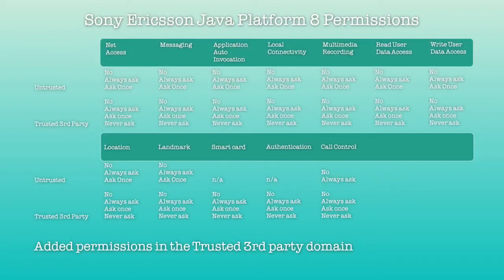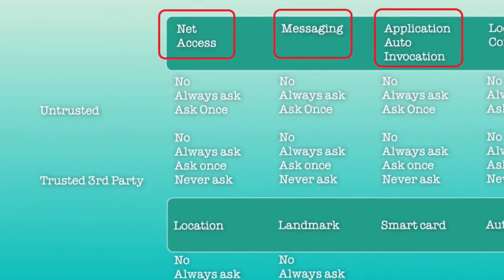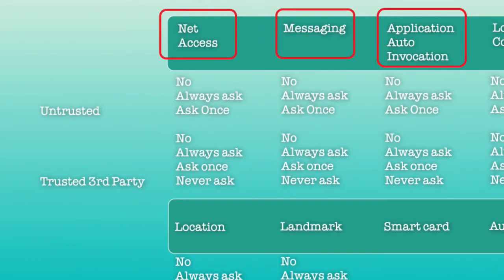There are different categories of system prompts in Java ME. For example, you will request access if you are using the internet, sending an SMS, or using the push register functionality in the phones. There are also different security domains in the phones. You have the untrusted domain, and you have the trusted third-party domain.